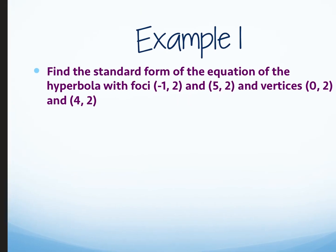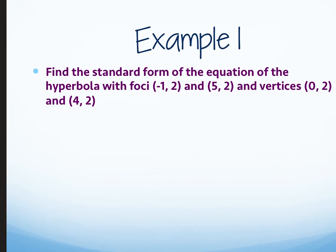Let's find the standard form of the equation of the hyperbola with foci at (−1, 2) and (5, 2), and vertices at (0, 2) and (4, 2). The first thing you should do when you're given a whole bunch of information is draw yourself a quick little picture, so I'm going to plot these points.